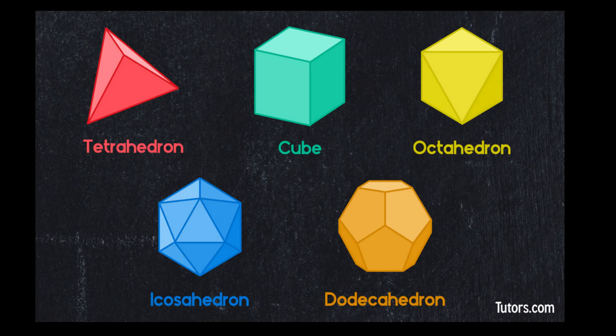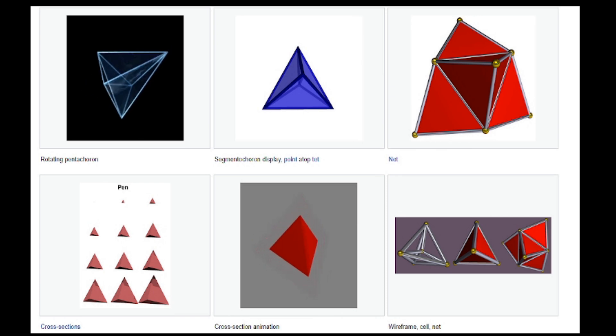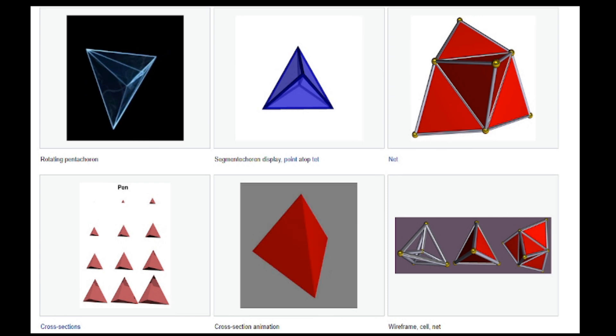Let's get to the 4D Platonic solids. While 3D has five Platonic solids, 4D has six. Five of them can be roughly compared with the 3D Platonic solids, and there's also one extra one. First of all, the rough equivalent of the tetrahedron is called a pentachoron, with five tetrahedral cells.